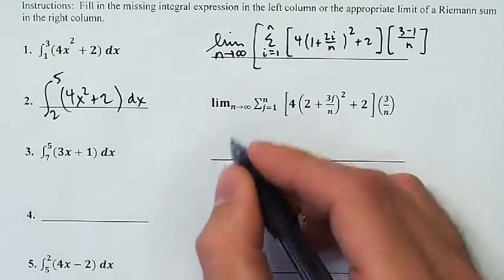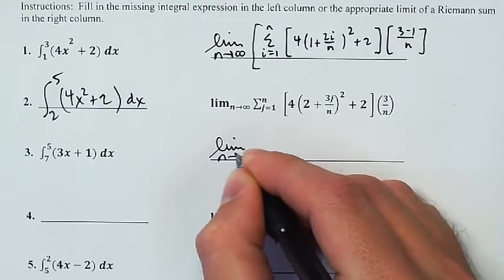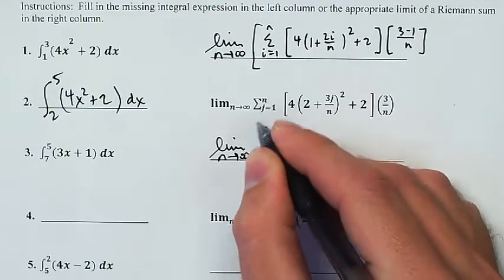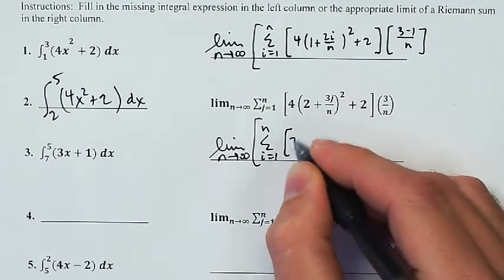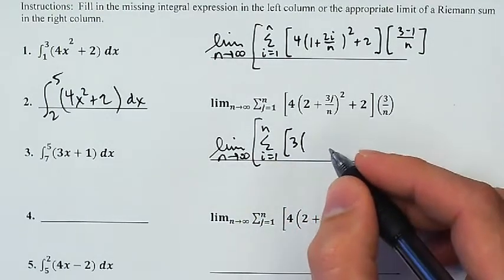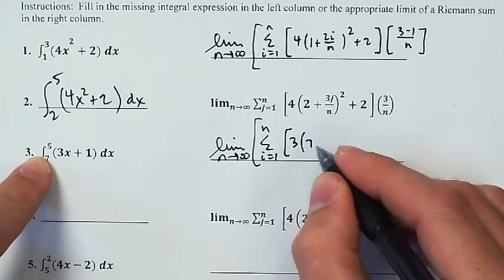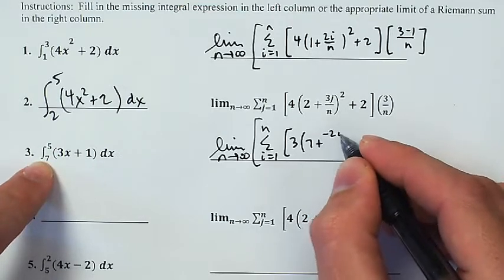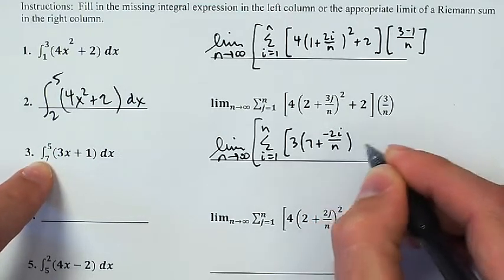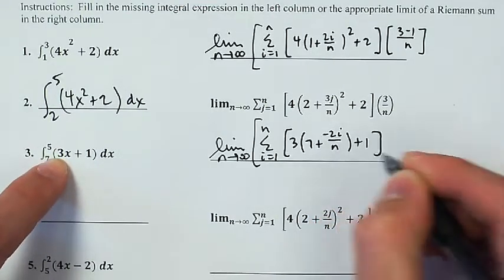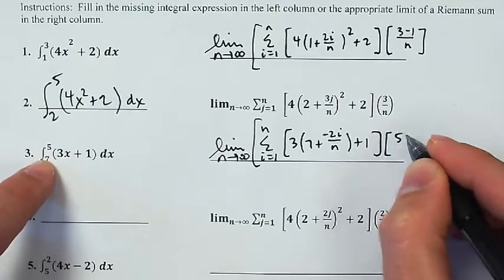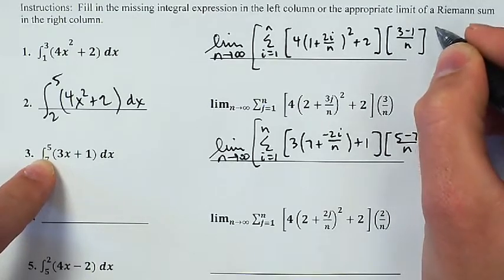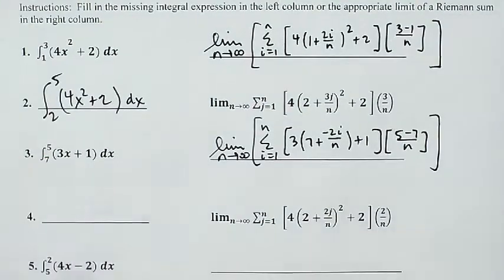This one, ready to go. I'm going to say it's the limit as n goes to infinity of the sum as i runs from 1 up to n. Let's see, 3x, 3 times x. And maybe I'll start with x. x starts at 7 plus, (5 - 7) is -2i over n. 3x + 1, delta x is (5 - 7) divided by n. Oh, I didn't put my back bracket on that one.